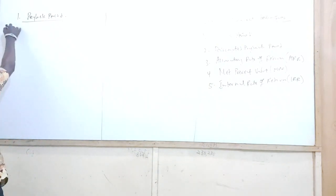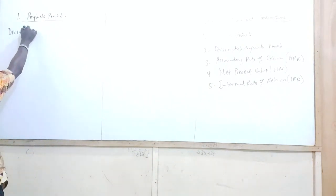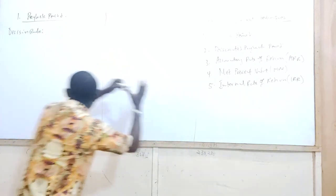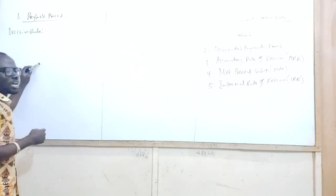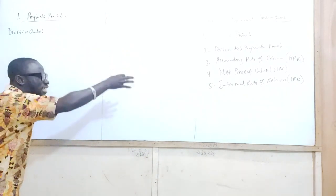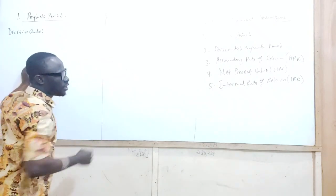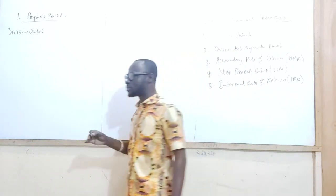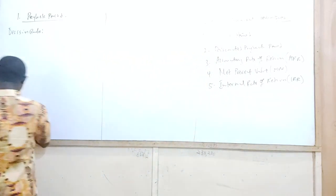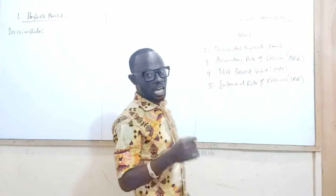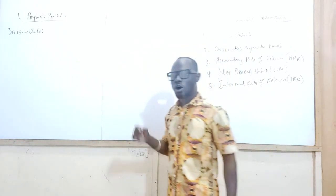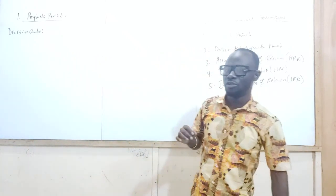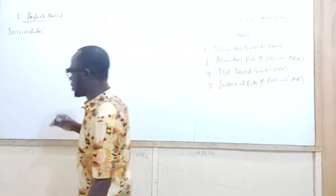When it comes to the payback period, the decision rule is this: the shorter the period, the better it is for the company. The shorter the period, the more acceptable the project is. That is the decision rule for the payback period.